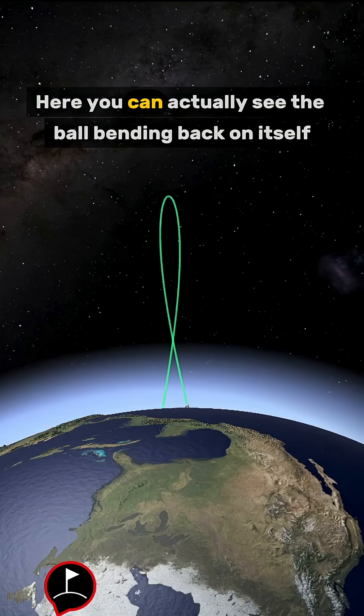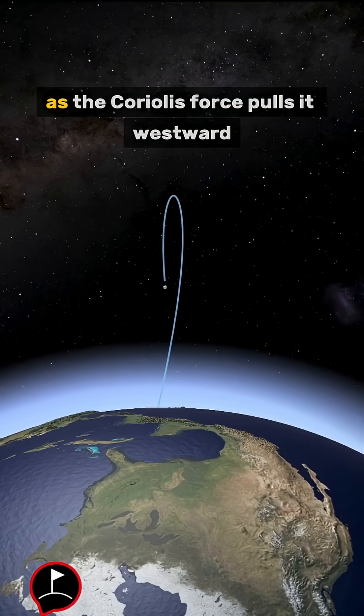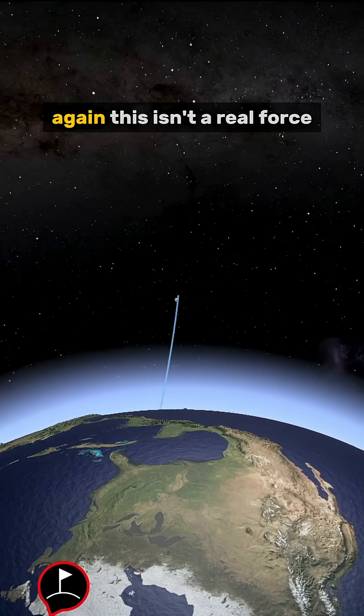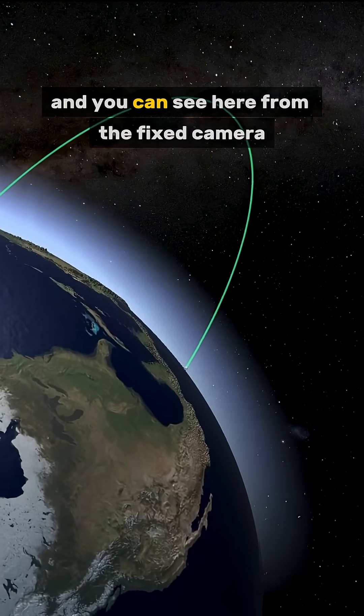Here you can actually see the ball bending back on itself as the Coriolis force pulls it westward while it's going up and eastward while it's going down. Again, this isn't a real force, and you can see here from the fixed camera it's just an illusion.